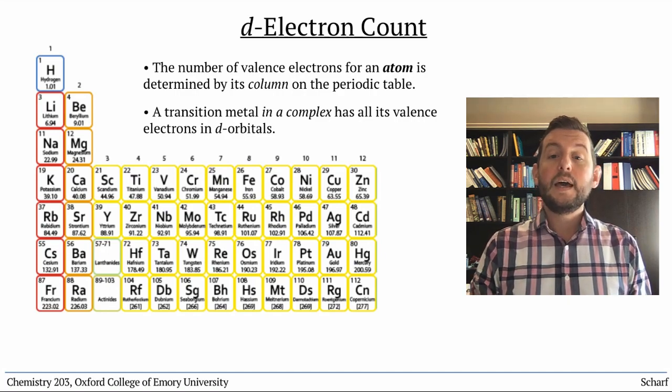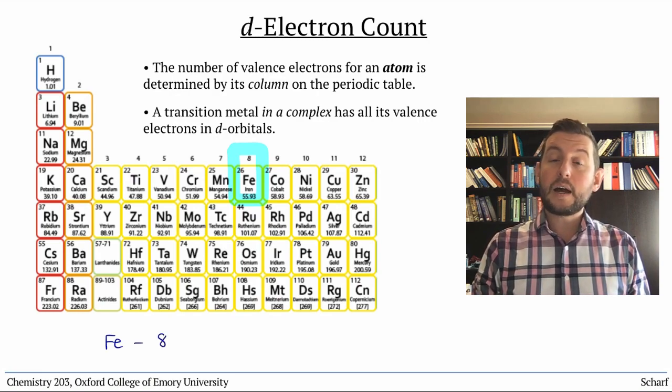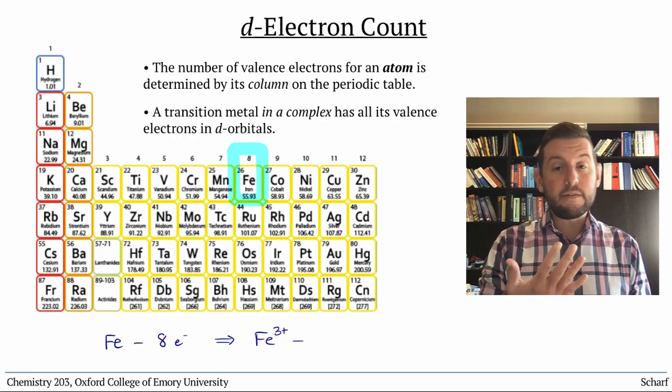For instance, an atom of iron has eight valence electrons. So an iron ion with a plus three oxidation state would have five valence electrons.